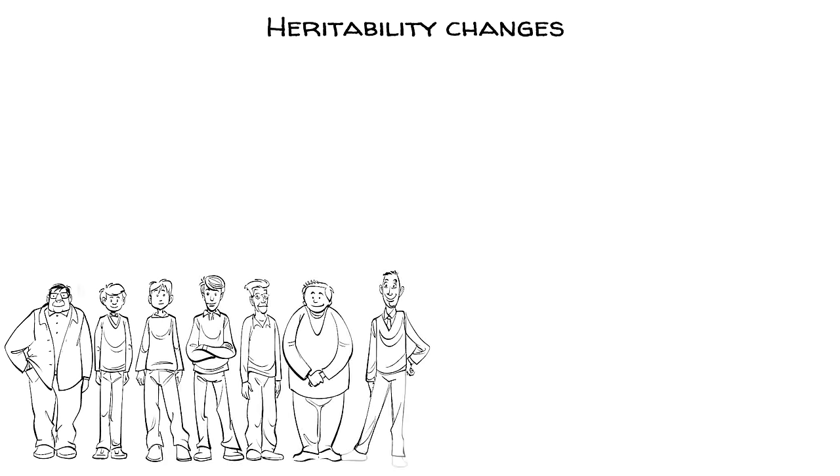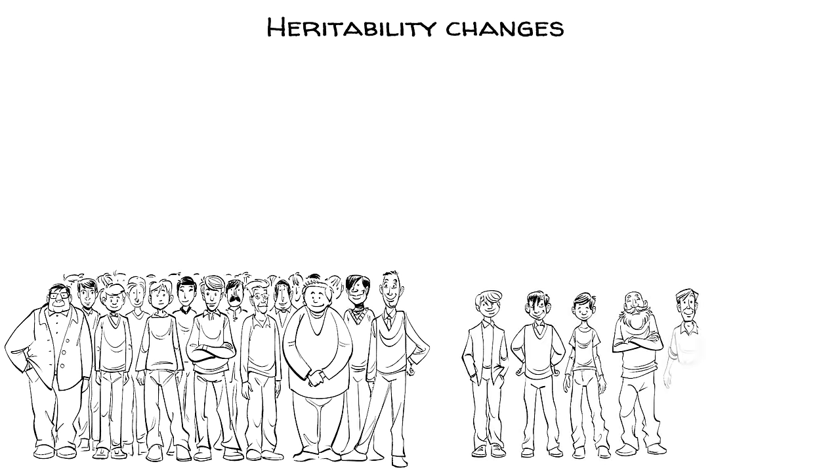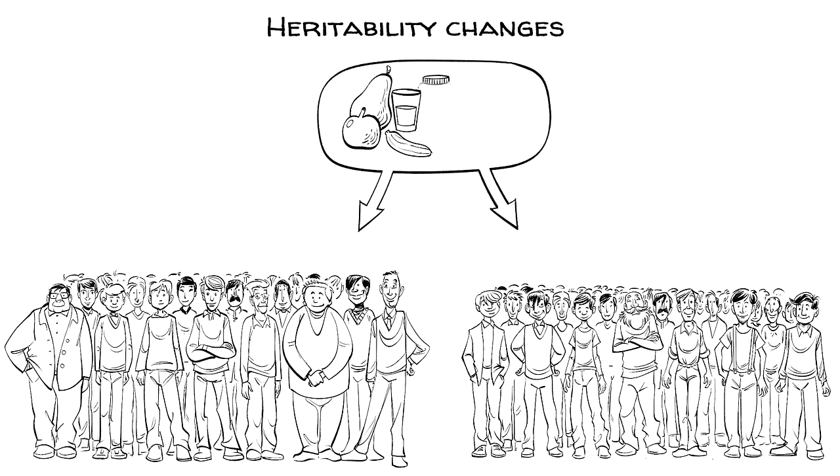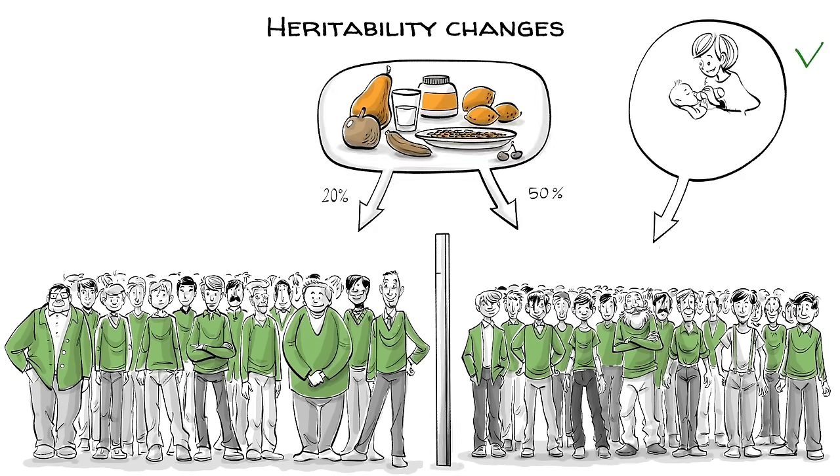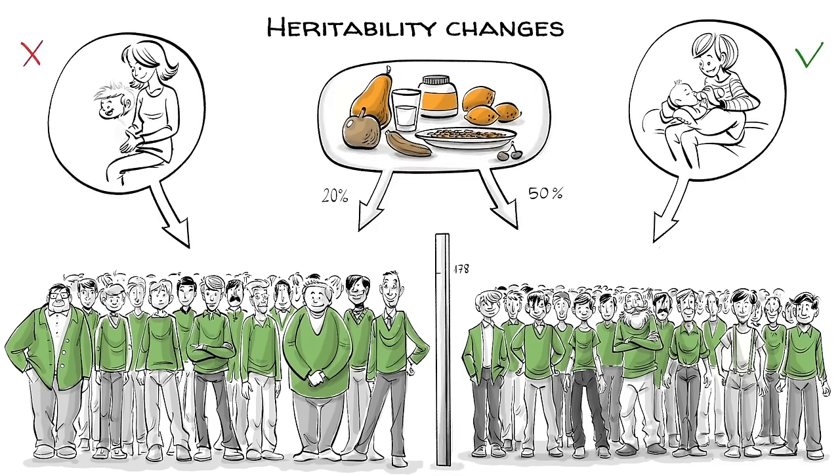This means heritability changes. If we have a well-nourished population on the one side and a malnourished group on the other, then the impact of nutrition on the differences in height changes from 20% to 50%. In other words, nurture matters a lot until we reach a point from which it's not as relevant.